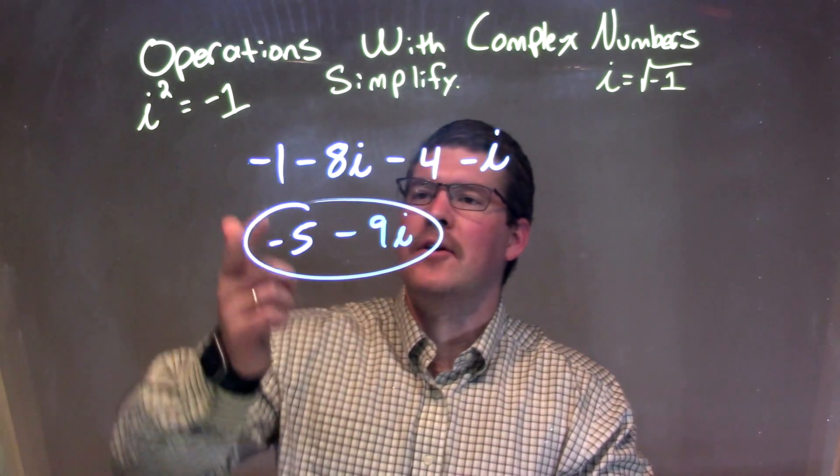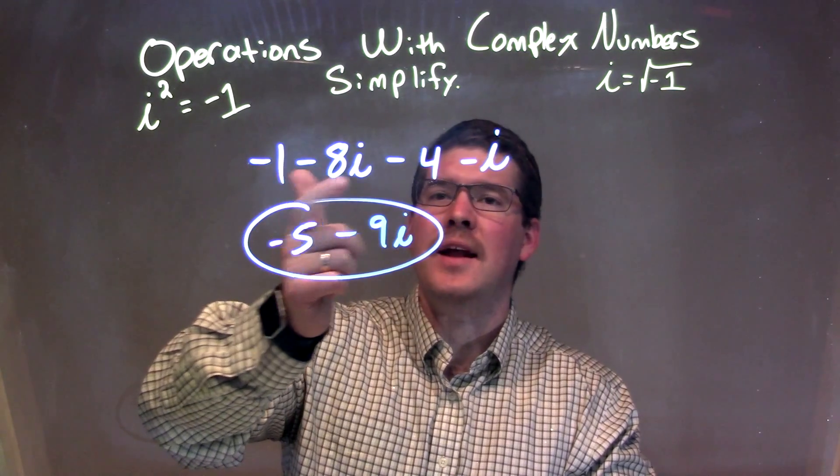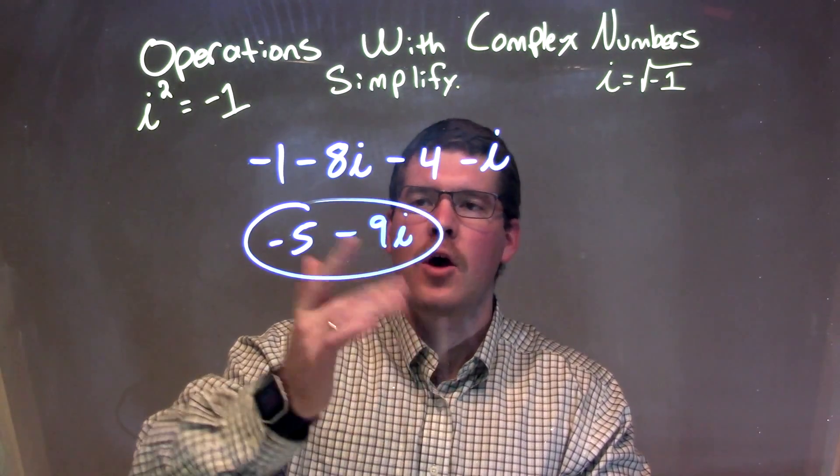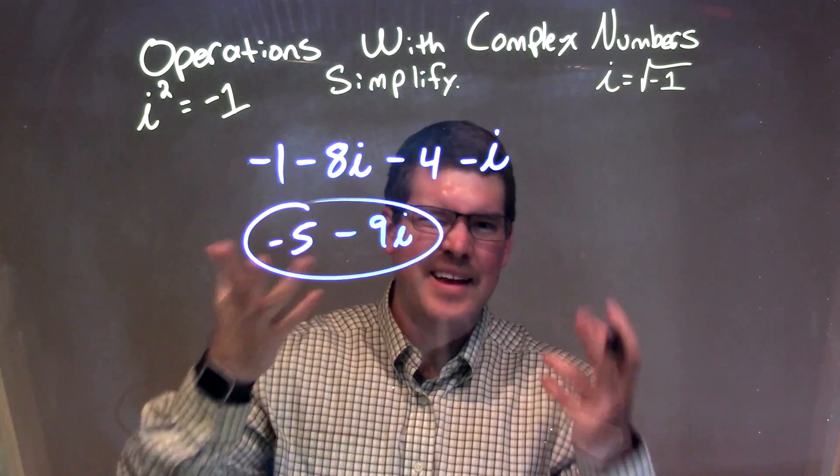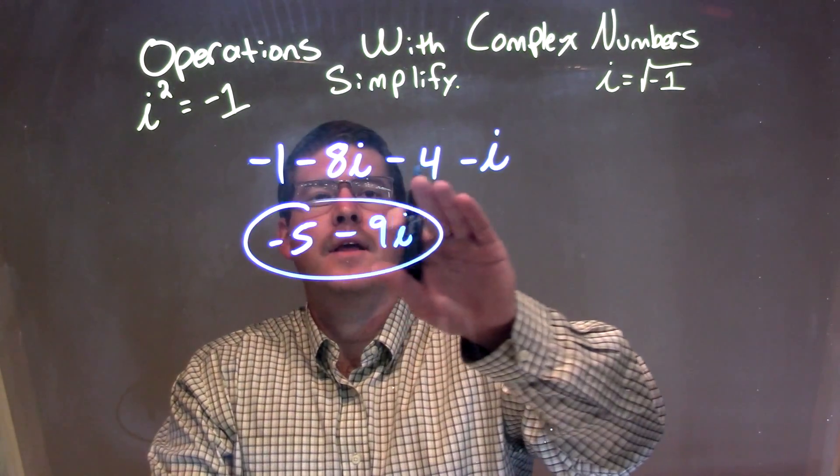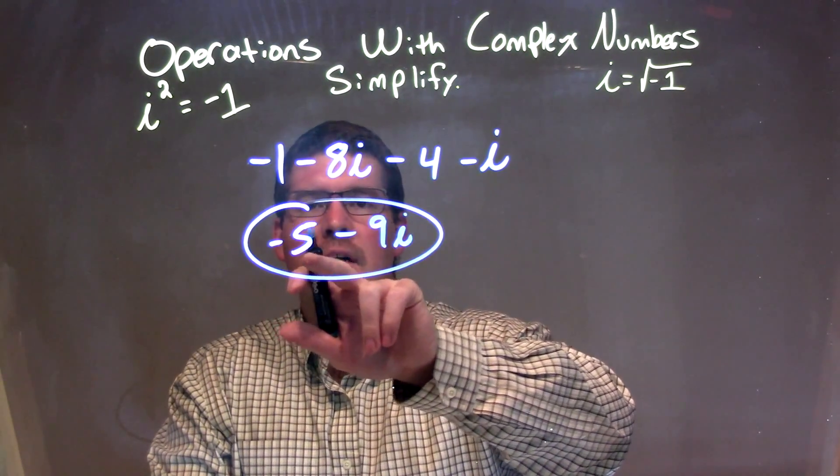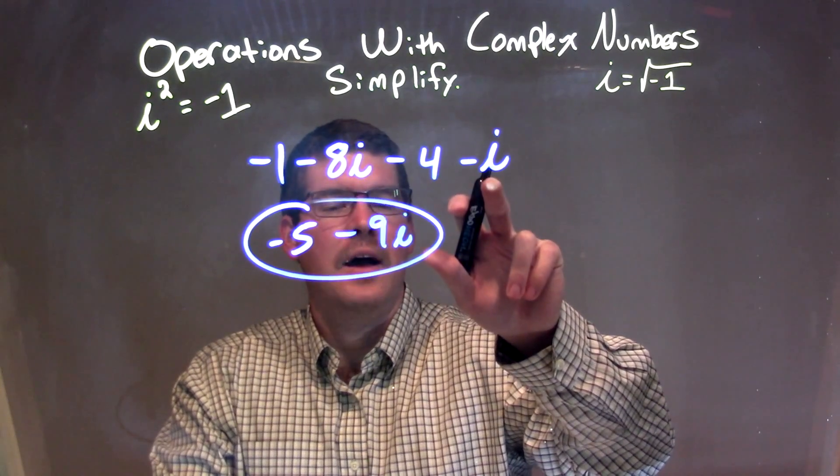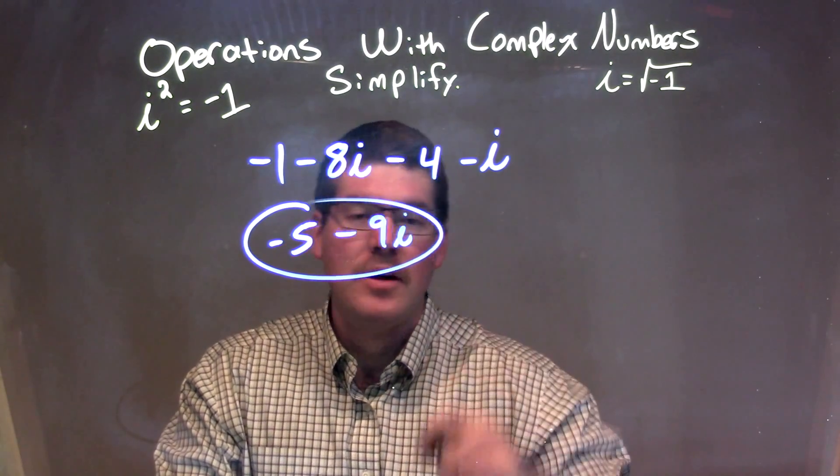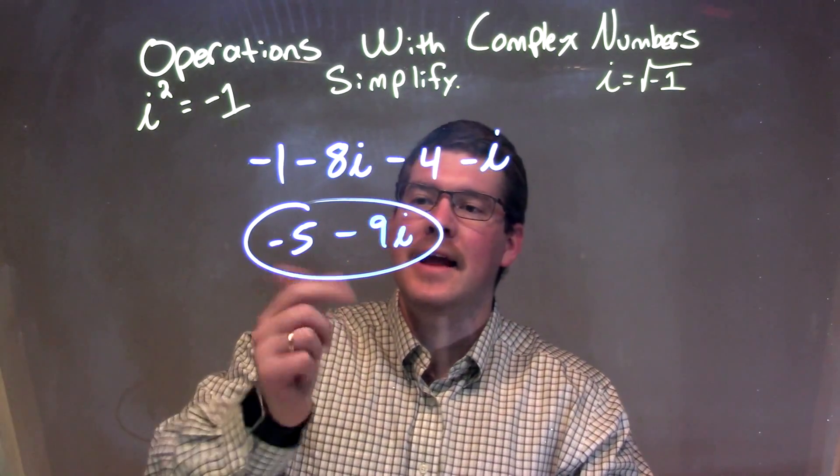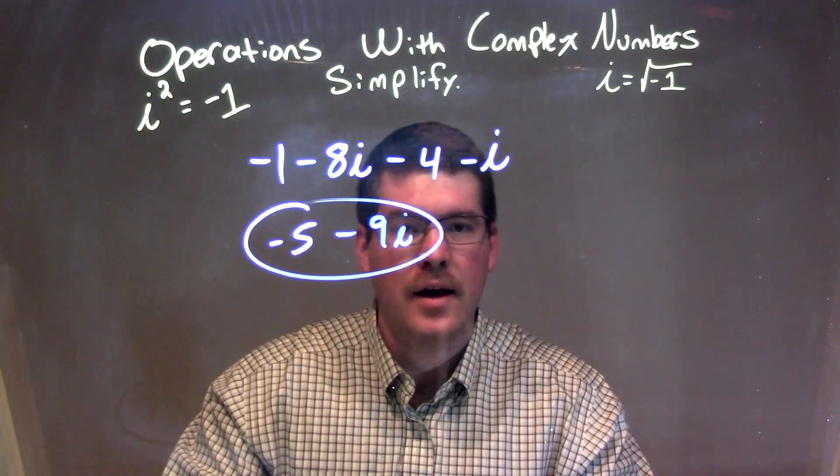Let's quickly recap. We have negative 1 minus 8i minus 4 minus i. We want to simplify this, so we combine what we call our like numbers. Negative 1 and minus 4 gives us negative 5, and negative 8i and minus i gives us negative 9i, giving us our final answer of negative 5 minus 9i.